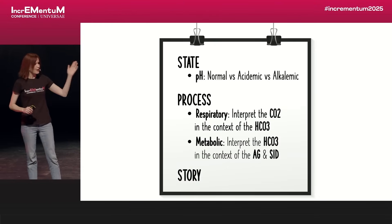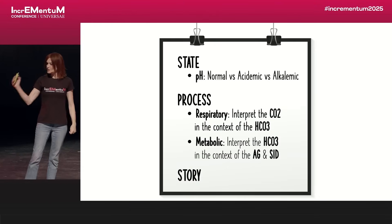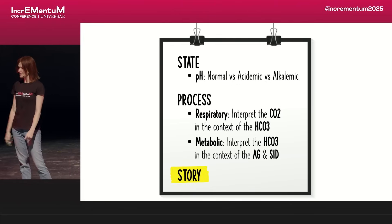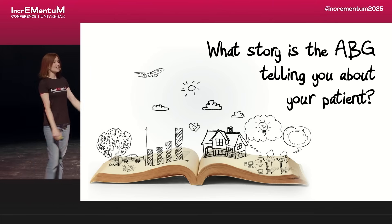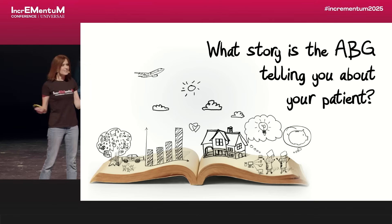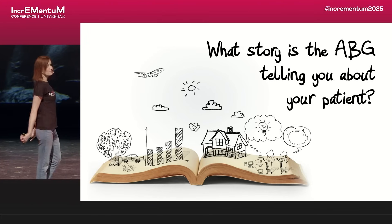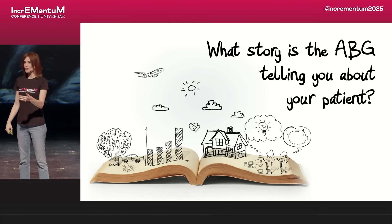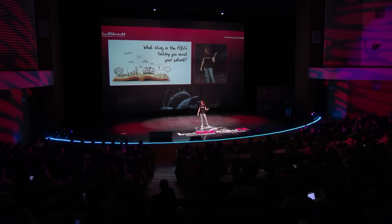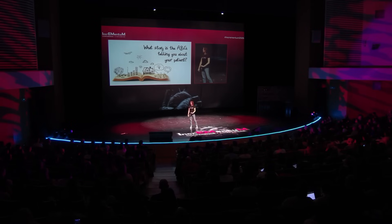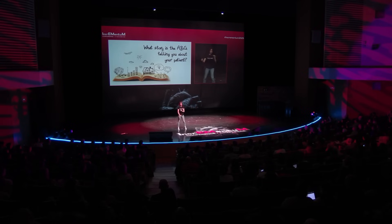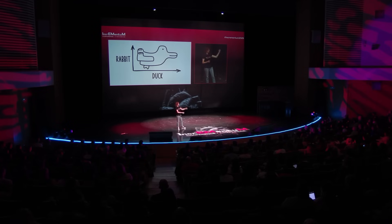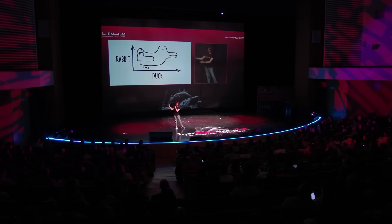Now let's talk about story. What story is the ABG telling you about your patient? Because once you get good with acid-base physiology, it's more like reading a story than doing a list of math problems. ABGs tell you critically important stories about your patient — you just have to read them. The identical ABG numbers can mean something very different depending on the clinical context of the patient. It's a rabbit-duck phenomenon: depending on the clinical context, it might look like a rabbit, it might look like a duck. You need the context.